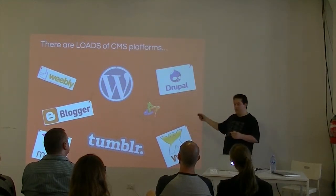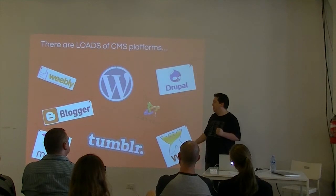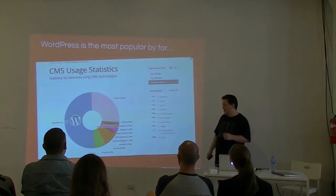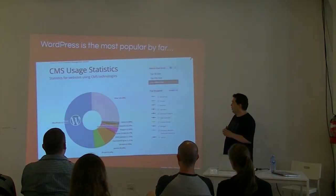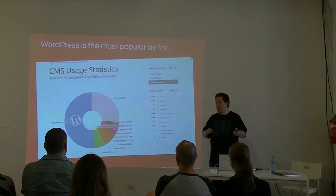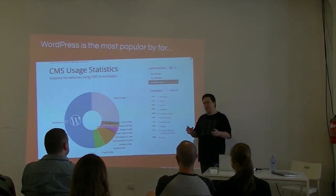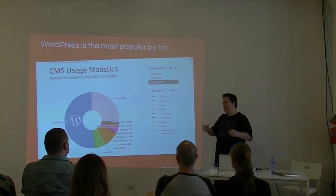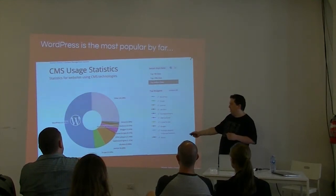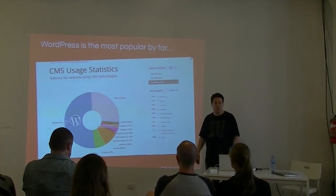There is a Joomla and a Drupal group in Melbourne as well. This data is from a site called Built With — they have a trends section. It's a bit hit and miss, taken from identifiable sites, not every single site. But you can see that the vast majority of identifiable content management systems are WordPress. From a popularity point of view, you've got vBulletin, Blogger, and a couple of other things, but WordPress dominates.